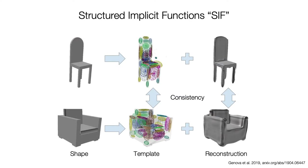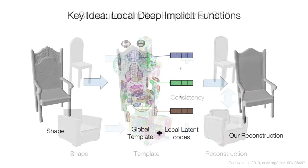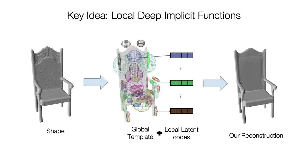Meanwhile, methods like SIF can infer consistent structured decompositions of shapes. However, they cannot reproduce shape details. Our key idea is to infer local deep implicit functions, a new 3D representation.